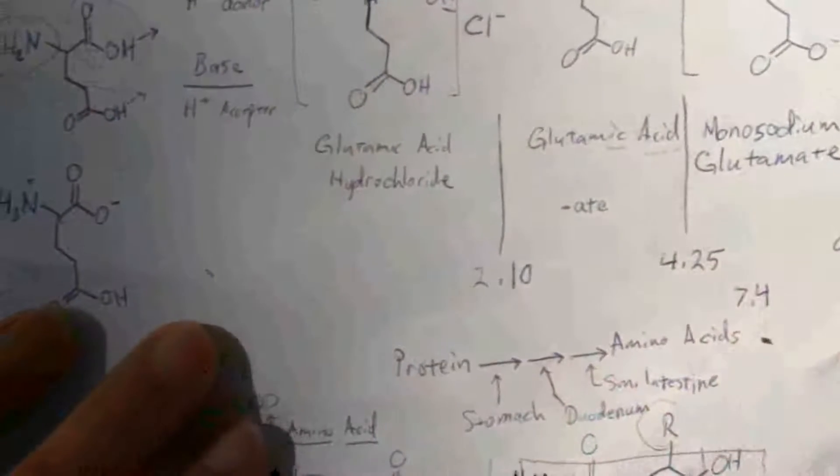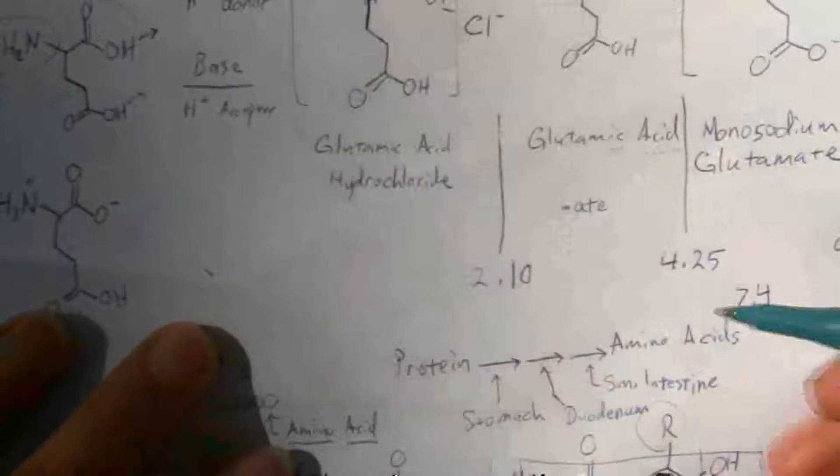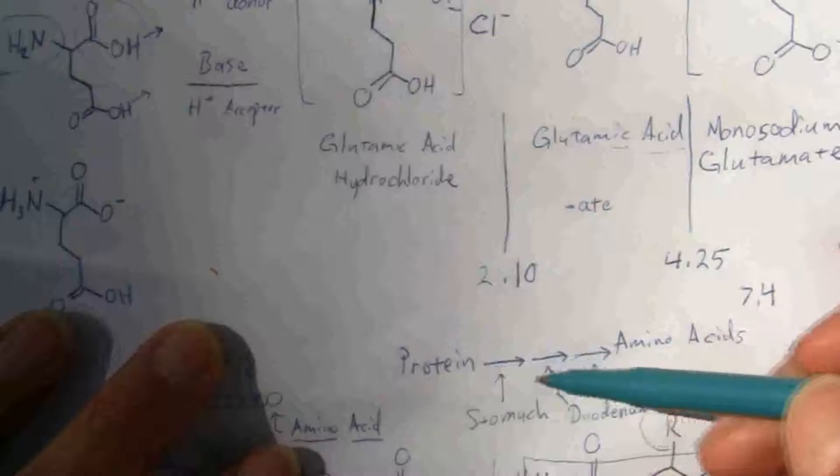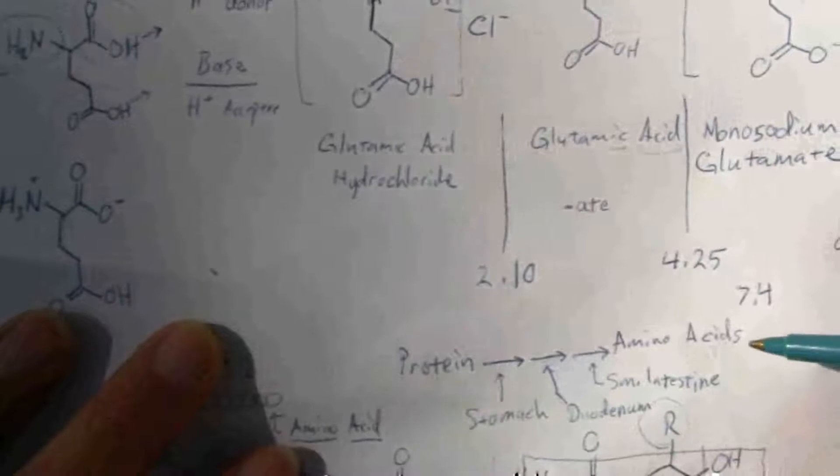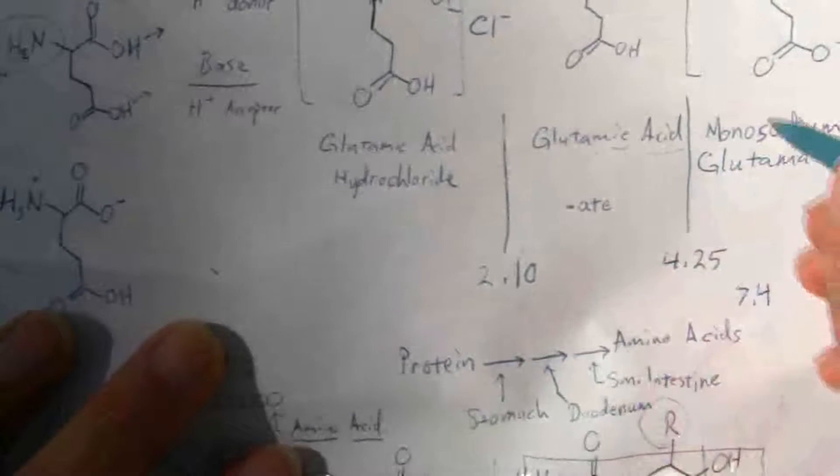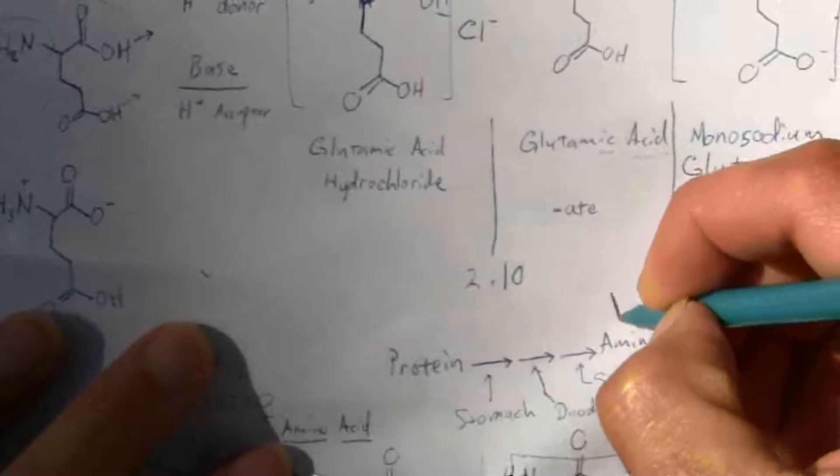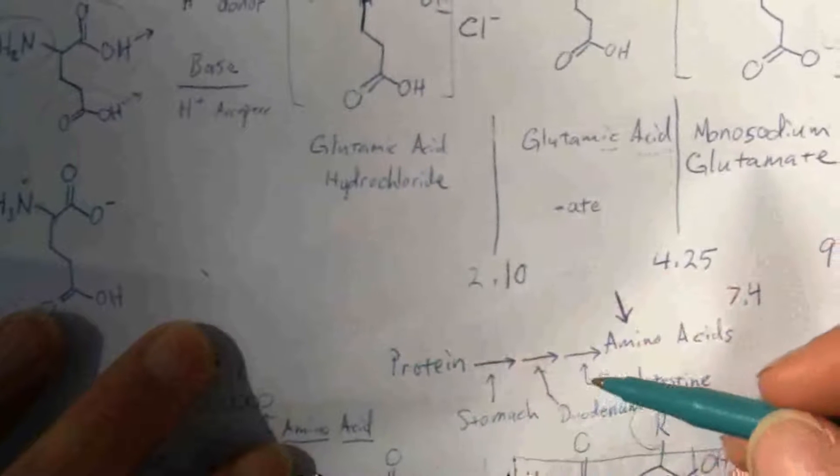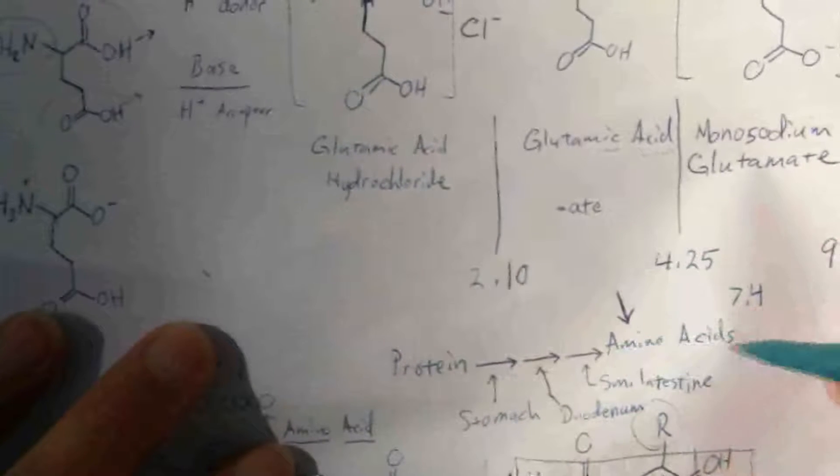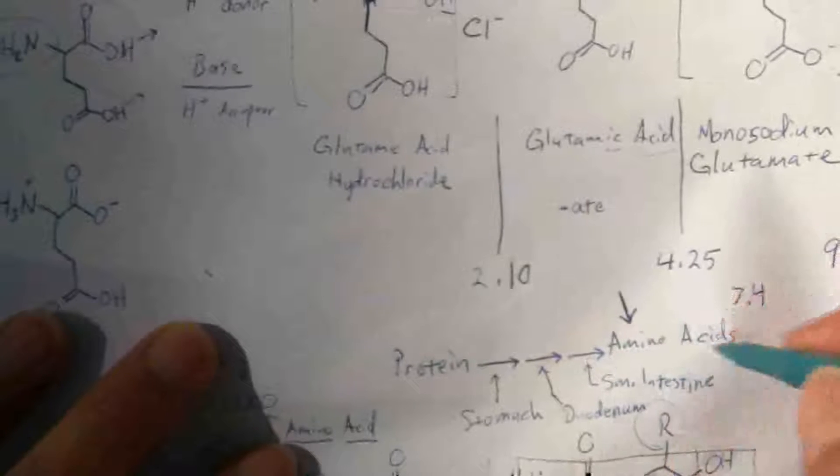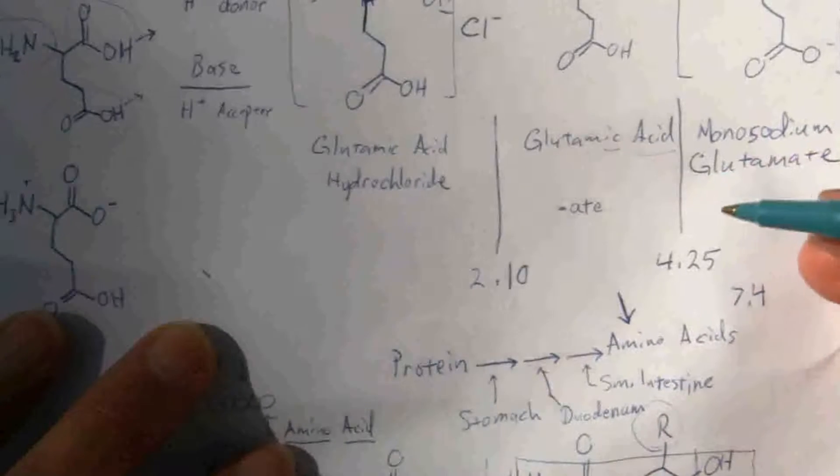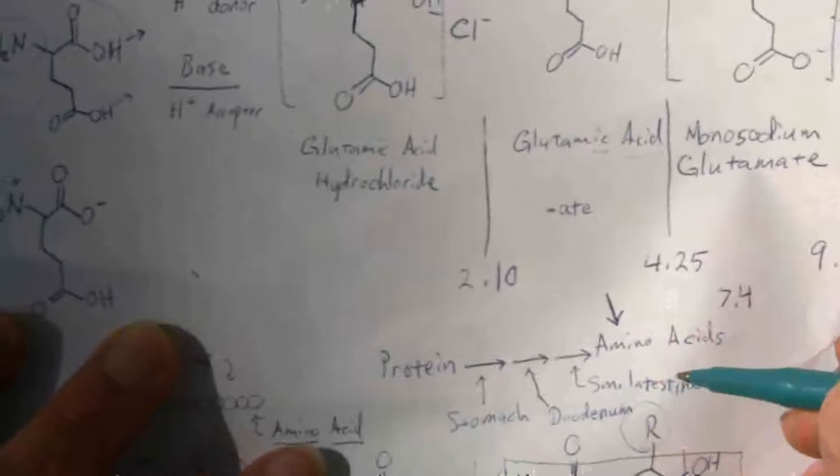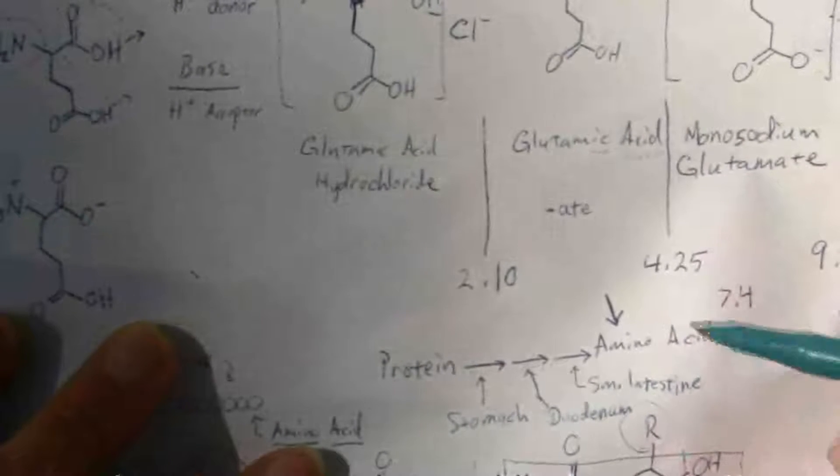That is the key difference, is that the protein goes through this digestion process, whereas when you consume MSG directly, you're bypassing all of this process, which takes a considerable amount of time. And you're going straight to the amino acid. You're consuming the amino acid directly, and it gets absorbed directly into the bloodstream.